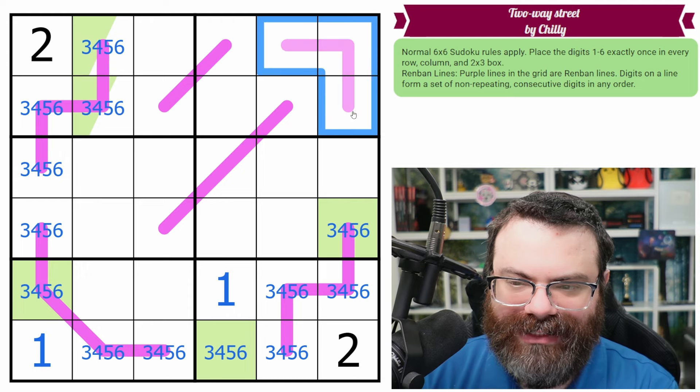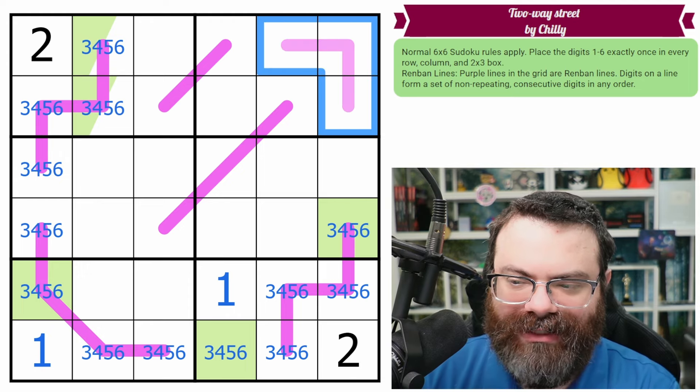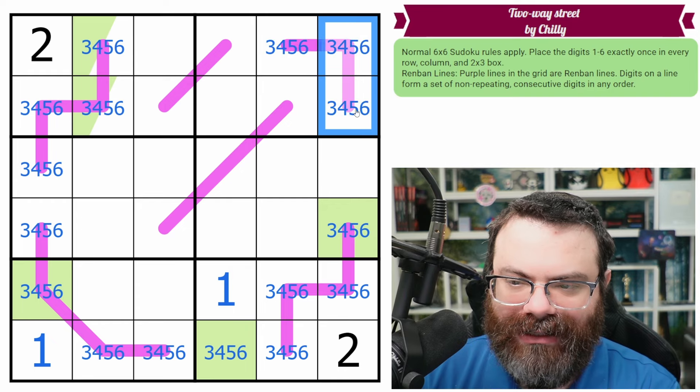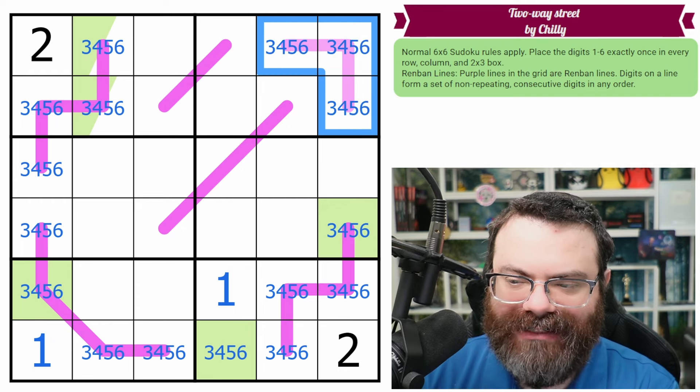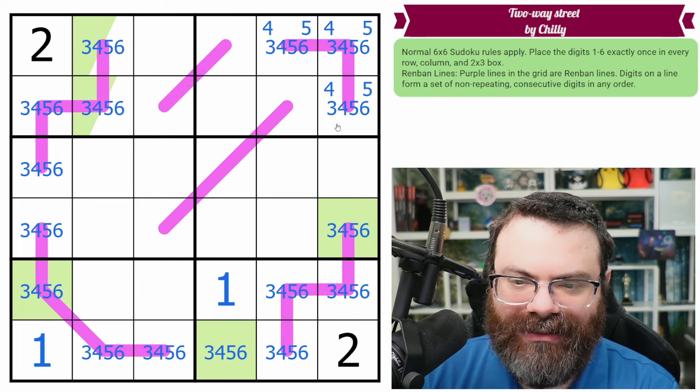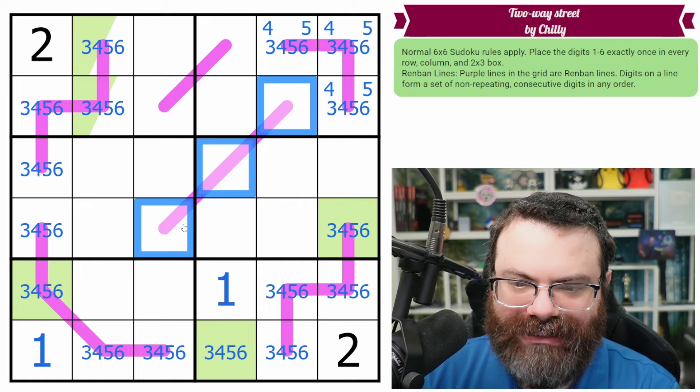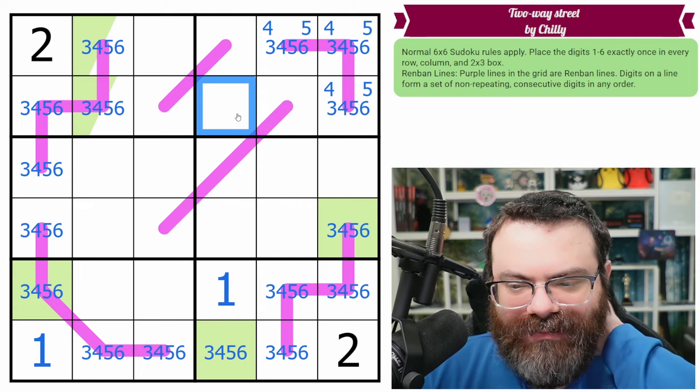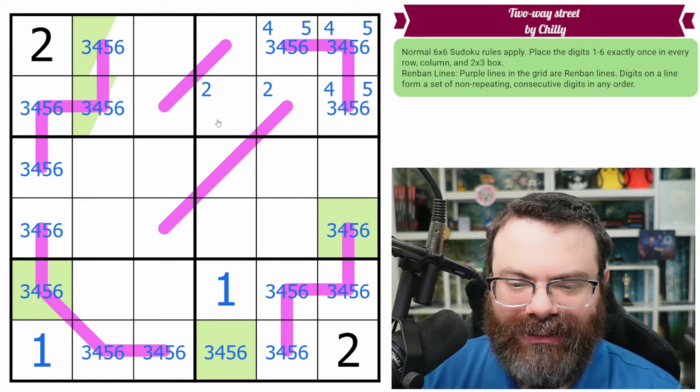But now this Renban sees a 2. So this is also from 3, 4, 5, 6s, because 1 gets excluded from it. So it definitely has a 4 and a 5 on it, but we don't know if it has the 3 or the 6 to go with that. Are any of these similarly restricted? We need a 2 down here somewhere, definitely.